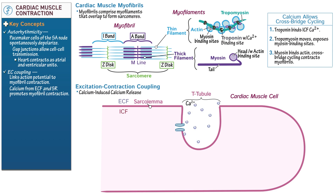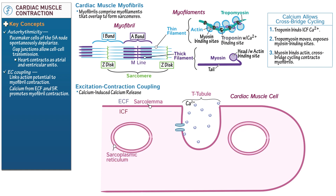Indicate extracellular fluid outside and intracellular fluid inside, and show calcium in the extracellular fluid. Within the cell, represent the sarcoplasmic reticulum, which is a membrane-bound organelle analogous to the endoplasmic reticulum found in non-striated cells. On the left, indicate that the sarcoplasmic reticulum stores calcium and show a ryanodine receptor calcium release channel passing through its membrane. On the right, show a sarcoplasmic reticulum calcium ATPase, also referred to as SERCA, and a sodium-calcium exchanger at the sarcolemma.